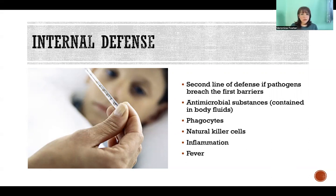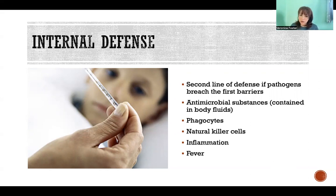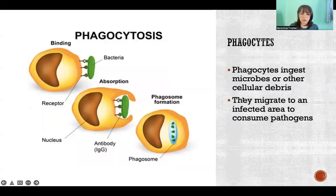Our internal innate defenses include antimicrobial substances — basically lysozyme, an antibacterial enzyme that kills all kinds of bacteria — and then also phagocytes, natural killer cells, inflammation, and fever, which is what I'm going to talk about for the rest of this video.